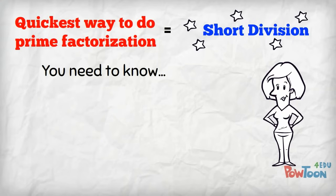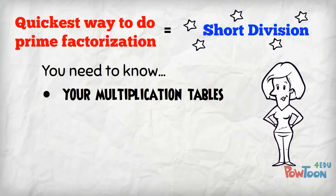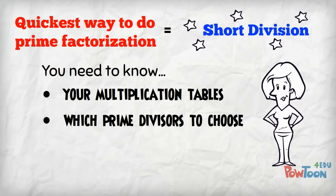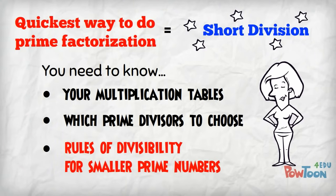To do short division, you need to know your multiplication tables. And for prime factorization, you need to know which prime divisors to choose, and that means knowing the rules of divisibility for the smaller primes.